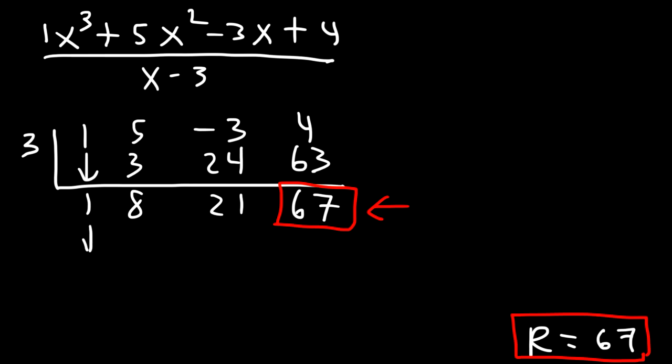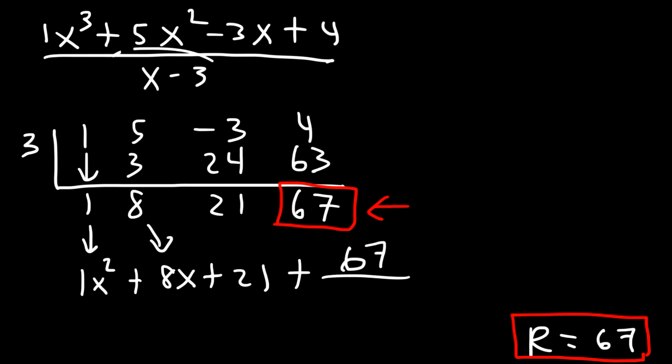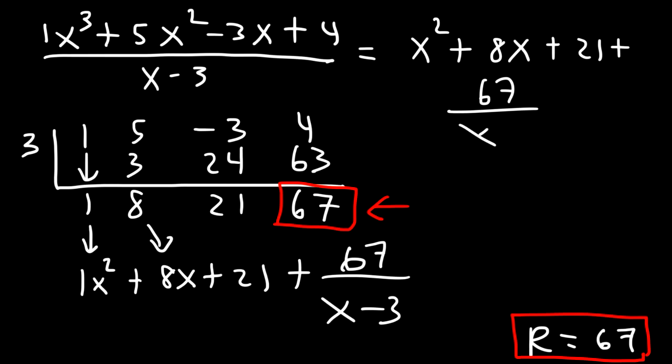So now, what is the answer? So this is the coefficient for x squared. And then this is the coefficient for x. And then we have our constant term. But what do we do with this? Since we have a remainder, it's going to be the remainder divided by what we try to divide it by, x minus 3. And so that's the answer. So x cubed plus 5x squared minus 3x plus 4 divided by x minus 3 is equal to x squared plus 8x plus 21 plus 67 over x minus 3.